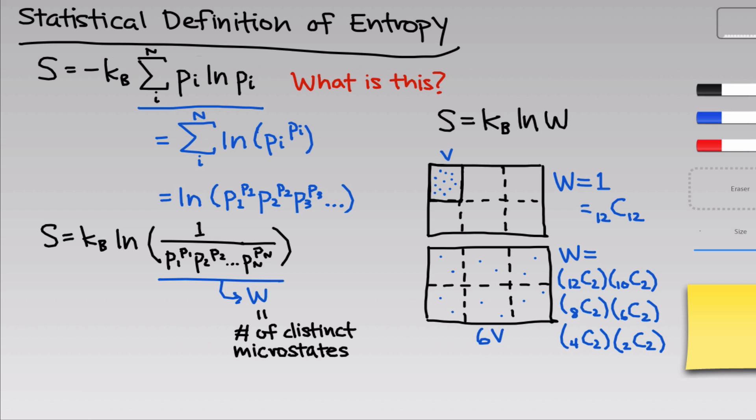It's worth noting that the natural log of W relates to S, so W can grow exponentially while S grows only linearly. Also, Boltzmann's constant is quite small, so very large changes in W can correspond to relatively small changes in S in joules per Kelvin. Nonetheless, S = k_B · ln(W) really captures the statistical definition of entropy at its essence: the more microstates that correspond to a particular macrostate, the higher the entropy. Expanding the gas from V to 6V corresponds to an increase in S and a massive increase in W.